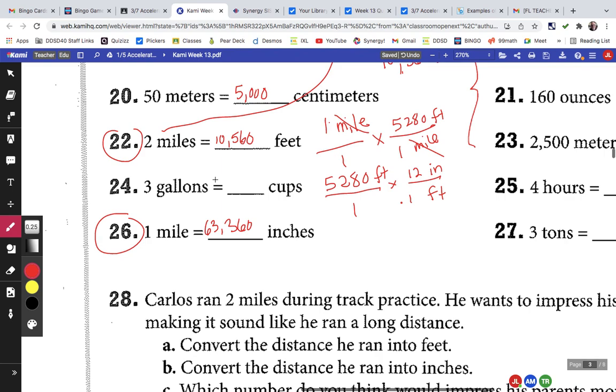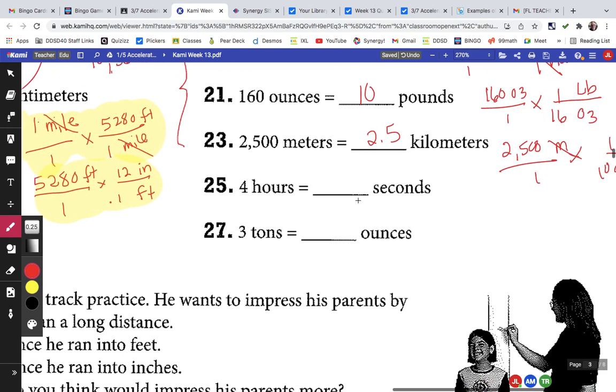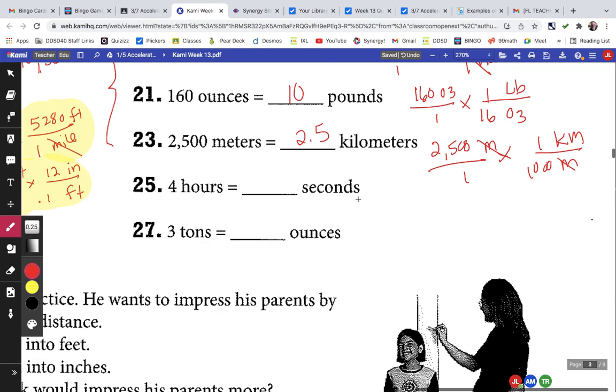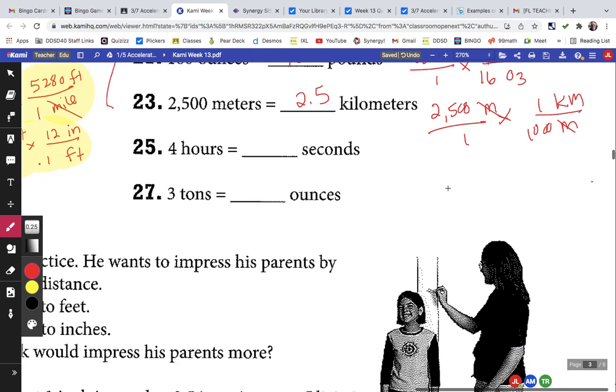So if you want to try the hour, so what made this different is we had to do two steps. We had to do this step right here, which was to change it to feet, and then we had to do this step right here, which was to change feet to inches. So if you want to try one on your own, we're going to do 4 hours to seconds. If you want to try that and then come back, so let's stop the video. Go try it. Okay, I'm assuming that you tried it.